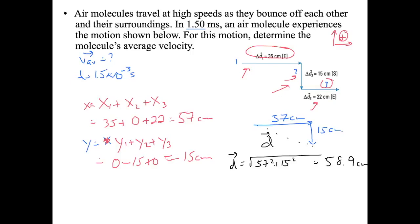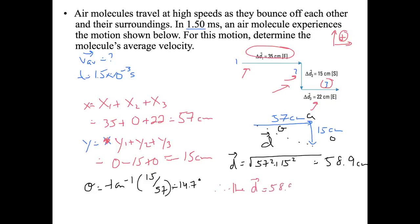We still need an angle: theta equals inverse tan of opposite over adjacent, so inverse tan of 15 over 57, which equals 14.7 degrees. Therefore, the displacement equals 58.9 centimeters, east 14.7 degrees south.